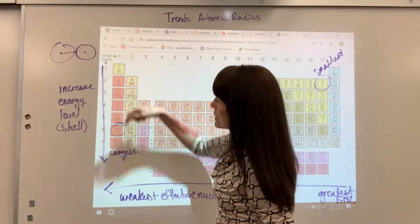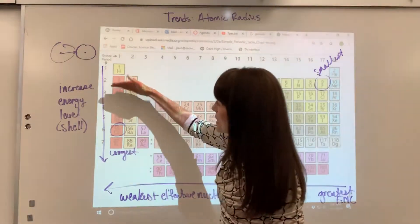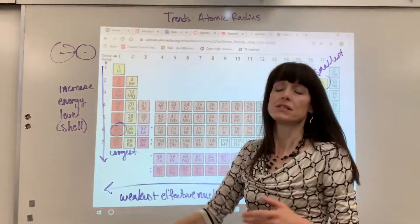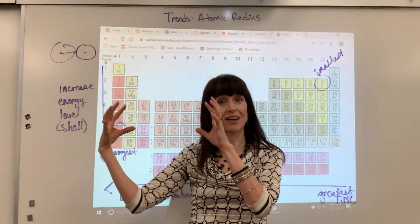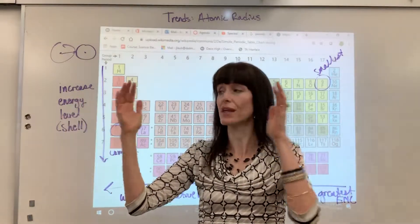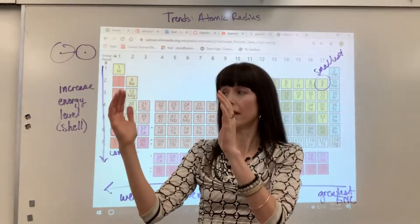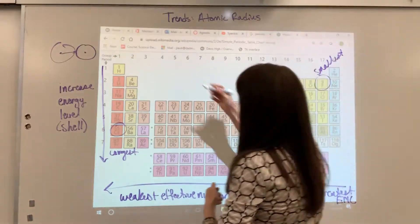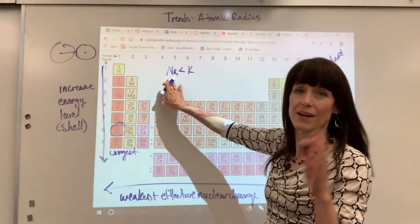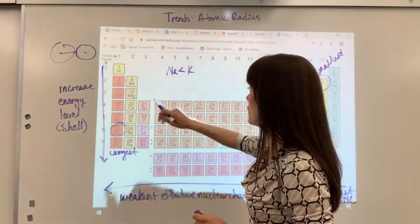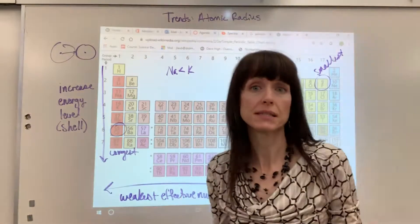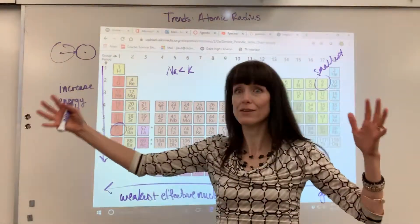The reason atomic radius increases as you go down the periodic table is because with each consecutive energy level, the atom gets larger. Let's compare sodium with potassium. Sodium's valence shell is at the third energy level; potassium's valence shell is at the fourth energy level. We gained a whole energy level, so potassium is larger than sodium. I would say sodium has a smaller radius than potassium because sodium has one less energy level for its valence shell — it ends at the third energy level while potassium's valence shell is at the fourth. As you go down each period, you gain an energy level, and those atoms get bigger.